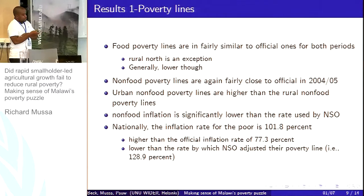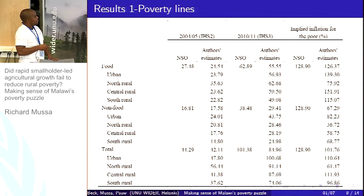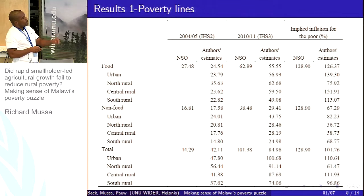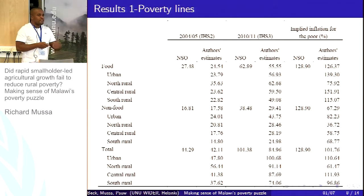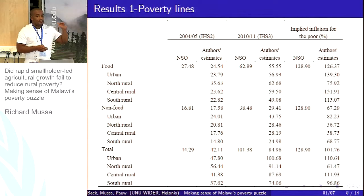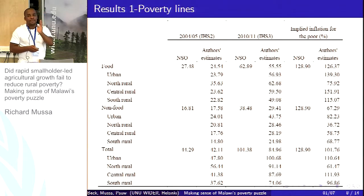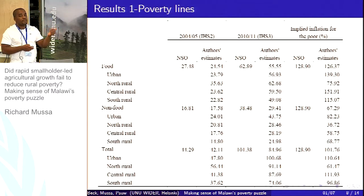The non-food component shows a marked change in our results. Looking at 2010-11, it is significantly lower than the official figures, and that is one of the drivers of the change in poverty results we'll see later. We tested whether this could be an artifact of our choice of poverty line using robustness analysis with different non-food components. For 2010, the non-food component is always lower than the official figure, regardless of the specification. It is a robust finding, not sensitive to the choice of poverty line.